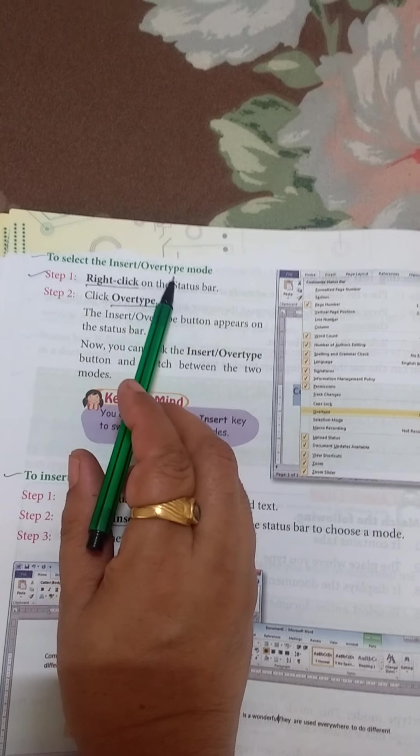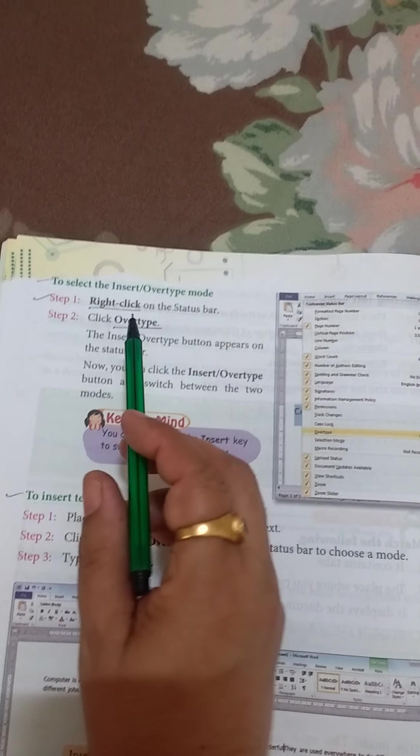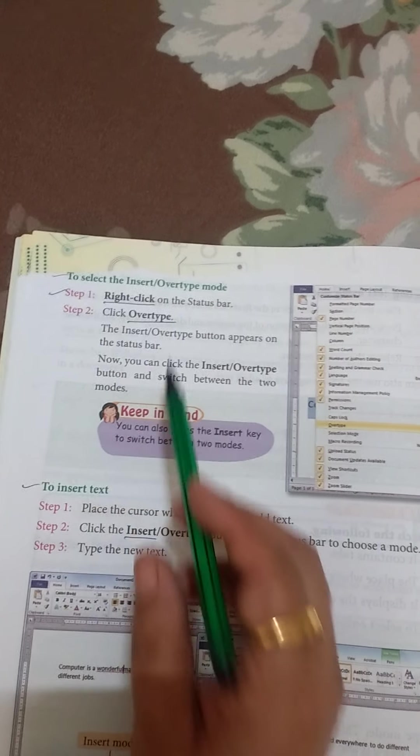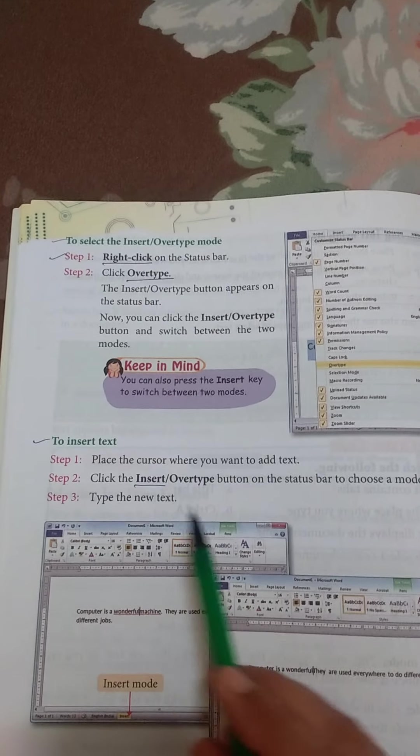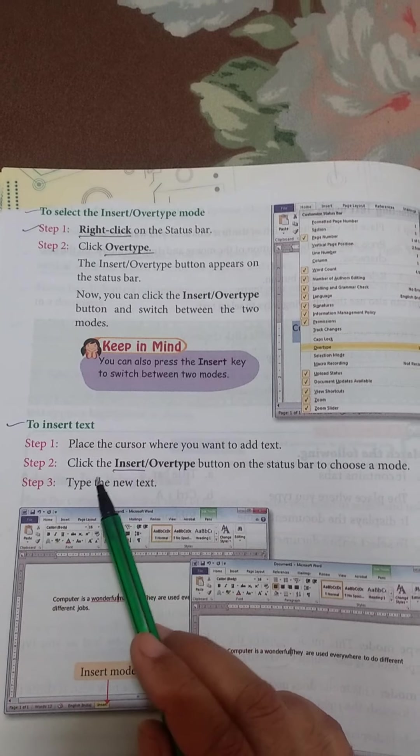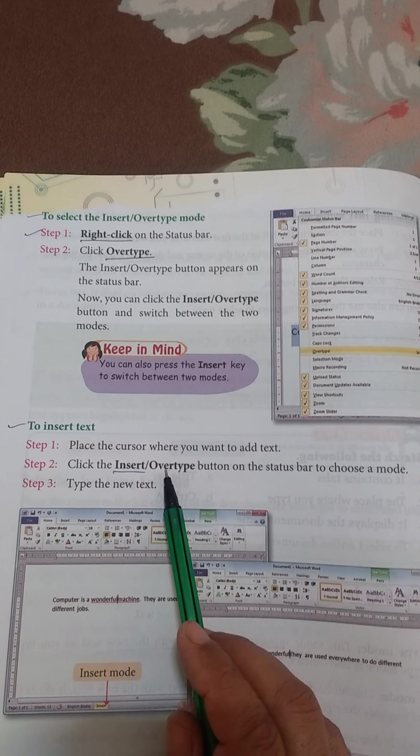To select the insert overtype mode, you have to right click and then choose overtype. For inserting text, place the cursor where you want to add text, then click on insert or overtype button.